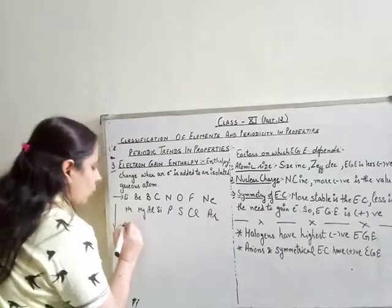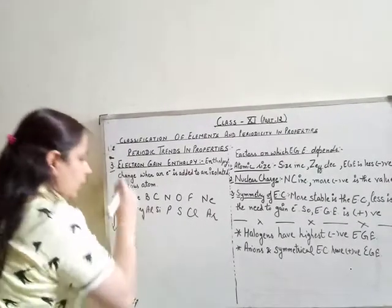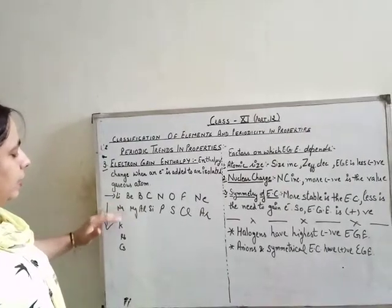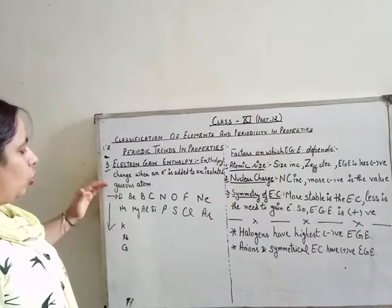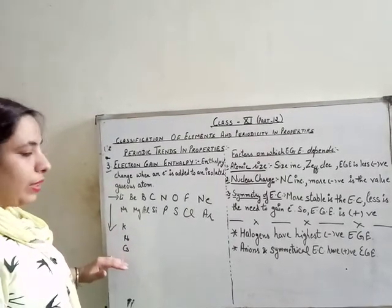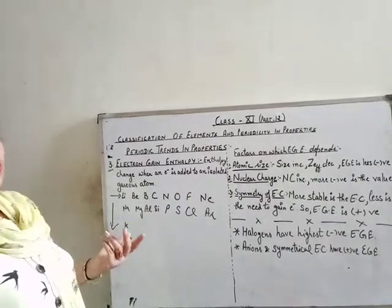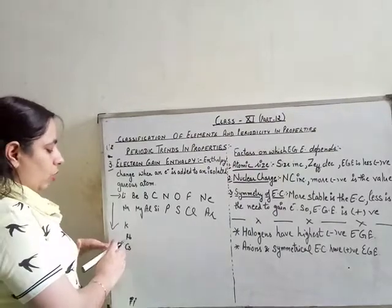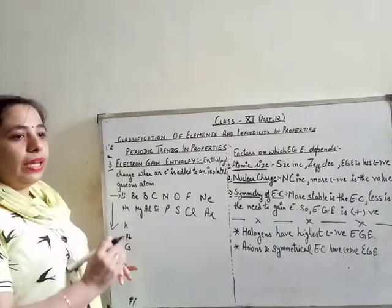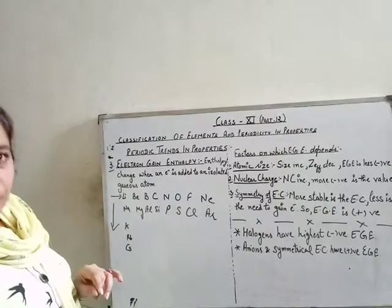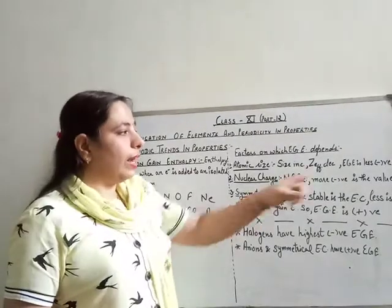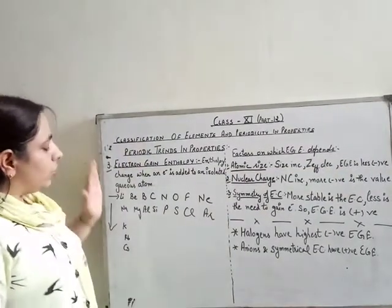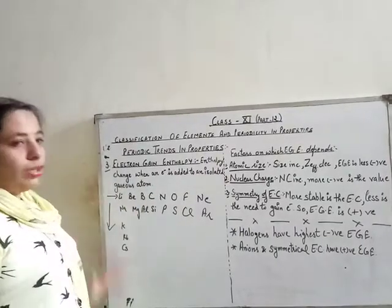Going down the group — lithium, sodium, potassium, rubidium, cesium — the atomic size increases because at each step a new shell is added. The distance of the valence shell from the nucleus increases, so the incoming electron experiences less attraction, is added less easily, and less energy is released. The value of electron gain enthalpy becomes less negative going down the group.